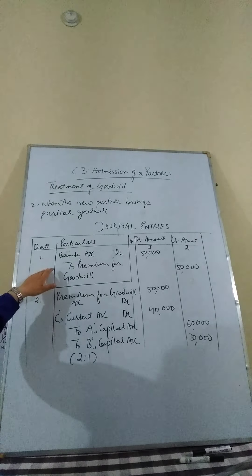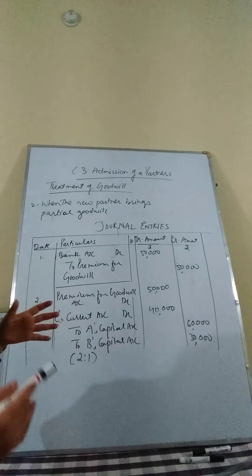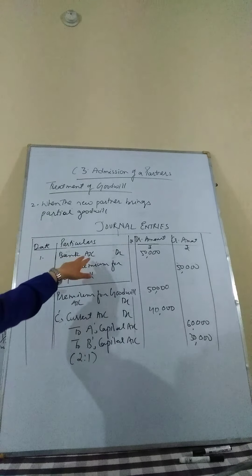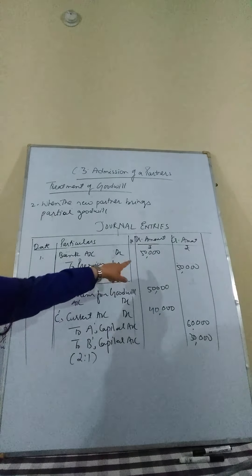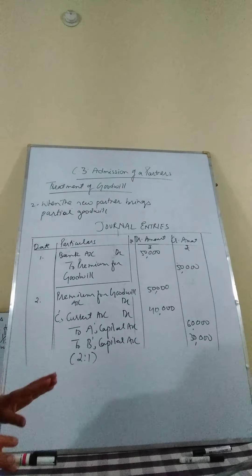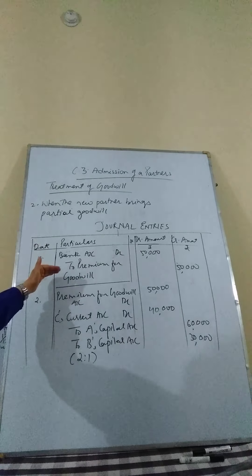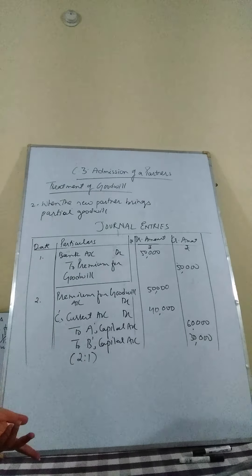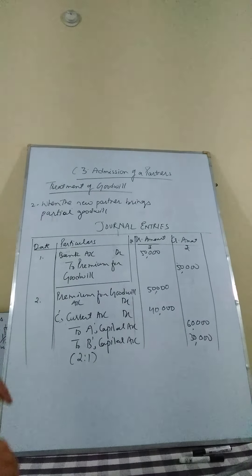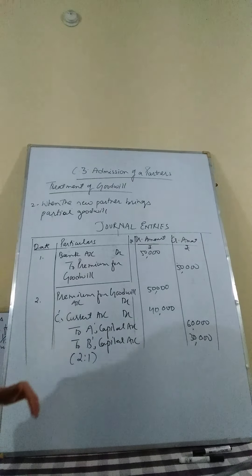The first journal entry is for the treatment of goodwill actually received in cash: Bank Account is debited to Premium for Goodwill. The actual cash received for goodwill was 50,000, so we will transfer this entry into the Premium for Goodwill account.